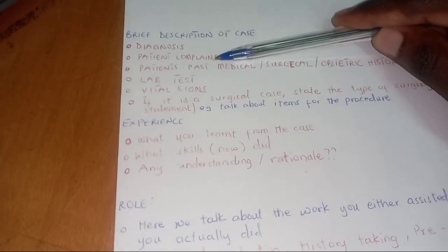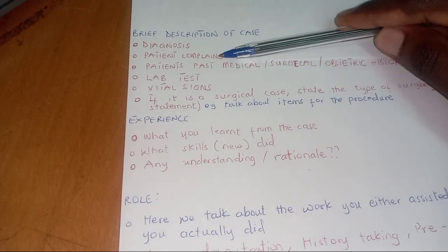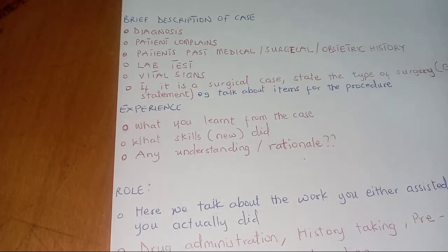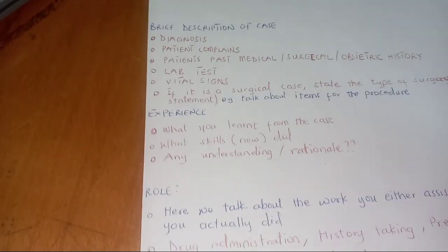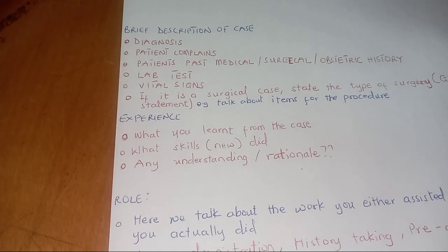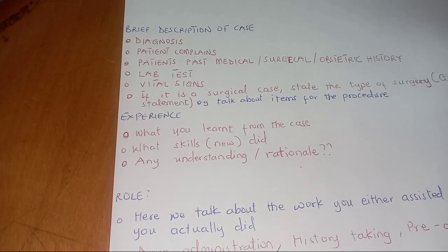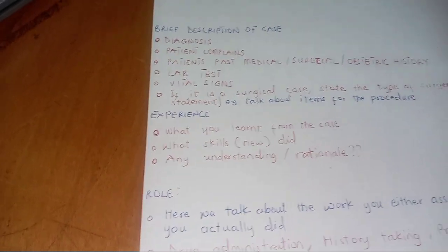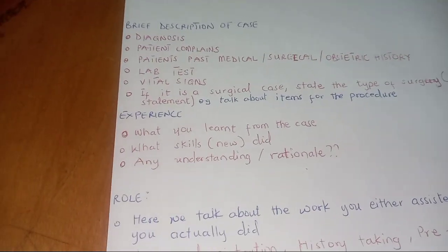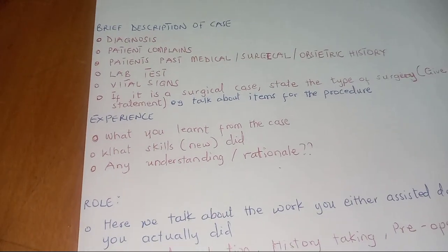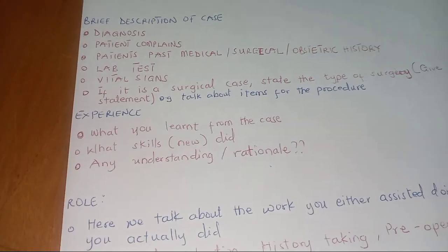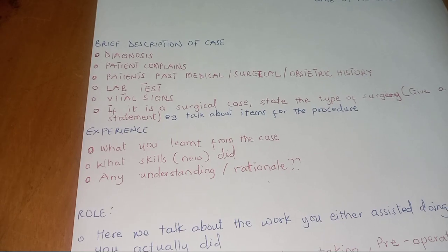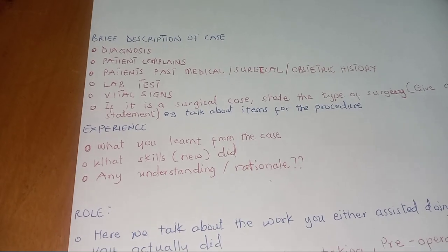You write the patient's chief complaints. Then the past medical, surgical, and obstetric history — any history at all that you can get from the patient, you can write in this segment. You can also talk about lab tests and vital signs. If it is a surgical case, you can also state the type of surgery and give a brief statement — you can talk about items for the procedure, etc.